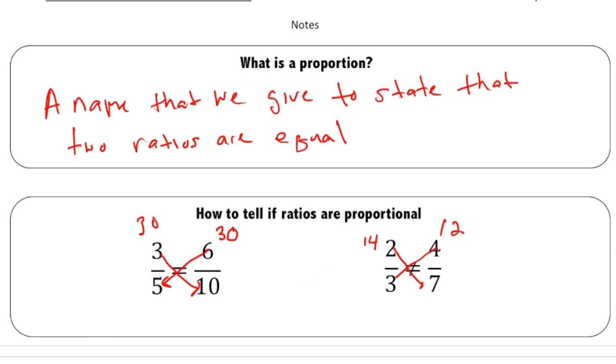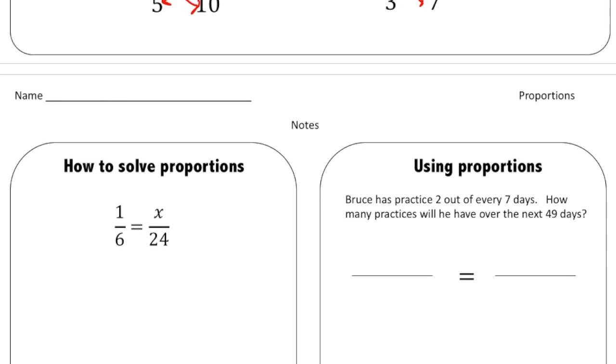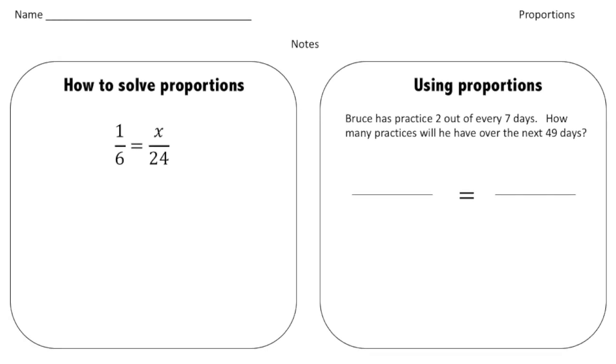Let's turn the page. So let's say for example we have two ratios that are equal, so they're proportion, and we're missing one of the parts. So here we have one sixth equals x over twenty four. So I want to know what this number has to be to make it so this fraction equals one sixth.